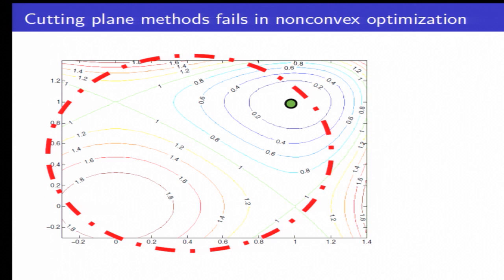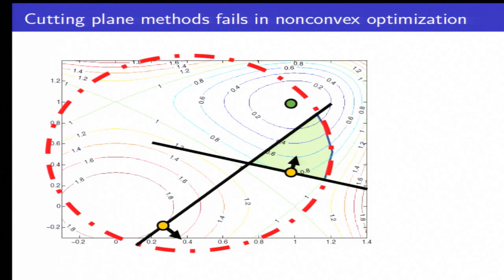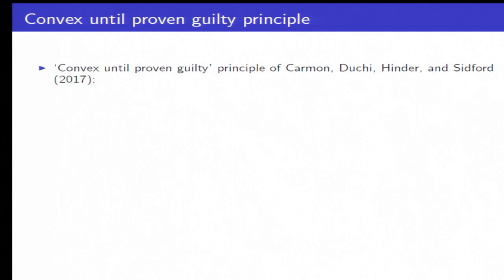Okay. Let's see what happens when we try to apply a cutting plane method in non-convex optimization. All right. Here I have a non-convex function and within this ball there is a local optimal. Let's say I pick a point here as the center of my cut. And then I pick another point over here as the center of my cut. You can see pretty quickly that we're going to have a region where there's no local optimal in that region. So that seems bad. Obviously, we can't just vanilla apply a cutting plane method.